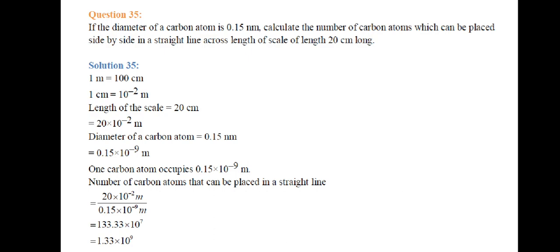1 meter = 100 centimeters and 1 centimeter = 10⁻² meters. Length of scale = 20 × 10⁻² meters. Diameter of carbon atom = 0.15 nanometers = 0.15 × 10⁻⁹ meters. One carbon atom occupies 0.15 × 10⁻⁹ meters. Number of carbon atoms = (20 × 10⁻²) / (0.15 × 10⁻⁹) = 133.33 × 10⁷ = 1.33 × 10⁹ carbon atoms.